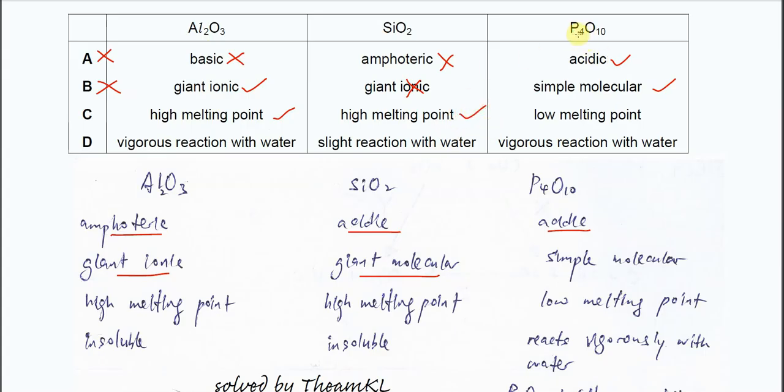The phosphorus oxide is a simple molecular. Therefore it just has weak Van der Waals forces between the molecules, so it has a low melting point. This is correct. So answer therefore is C.